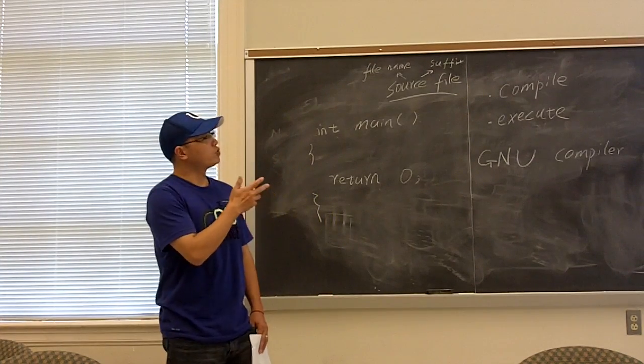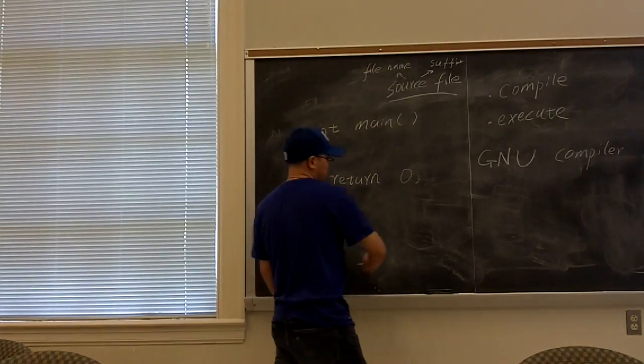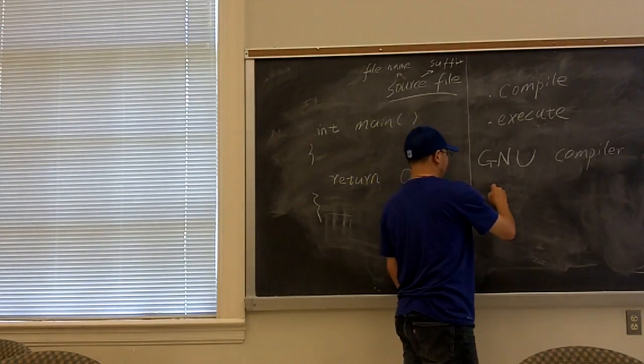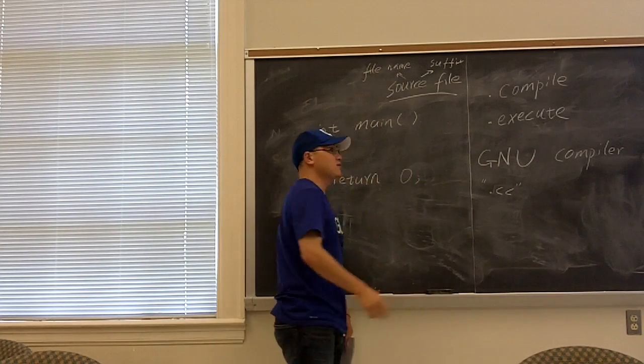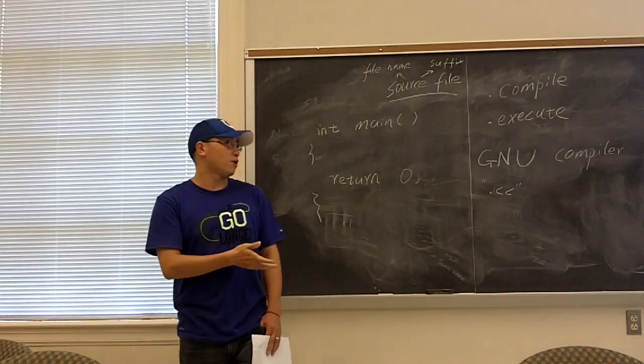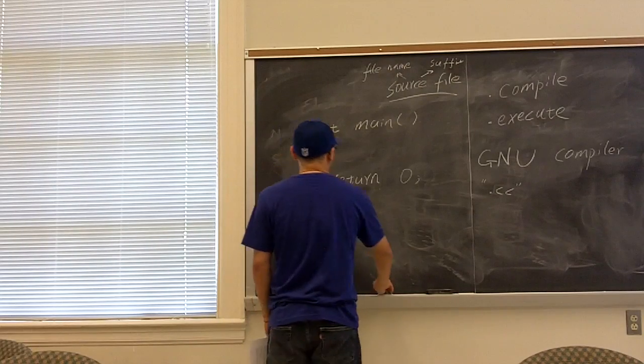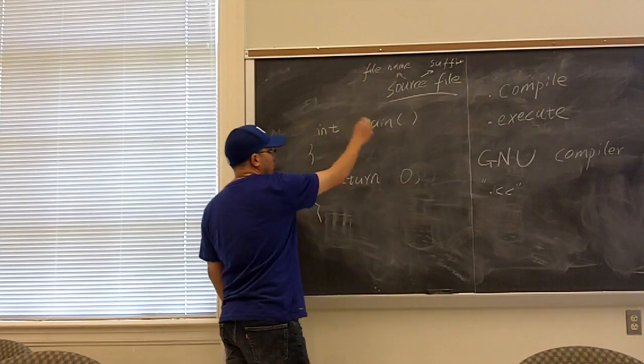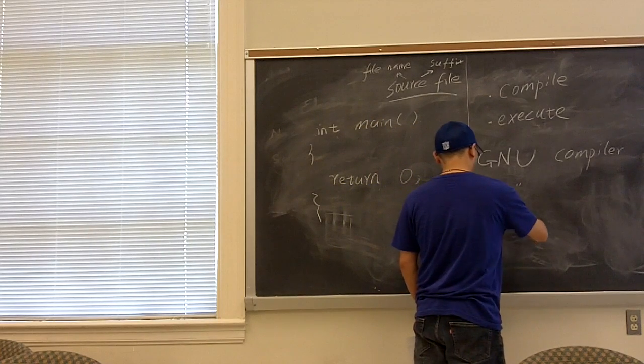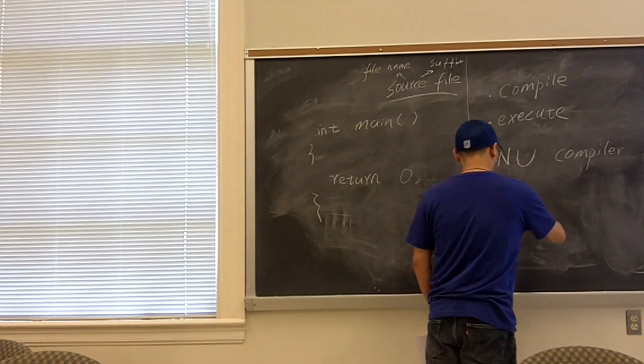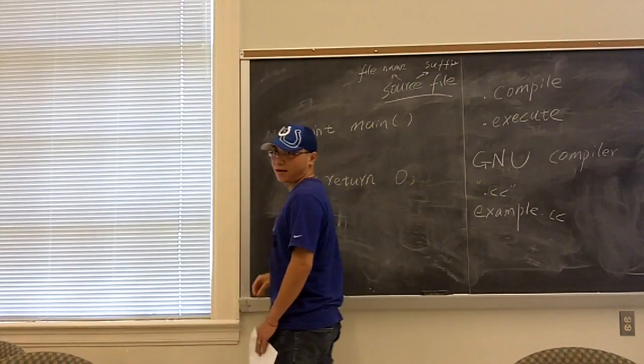For GNU compiler, it treats a file name with suffix .cc as a source file of CPP program. So we start our code into a file called example.cc. So this is our source file.